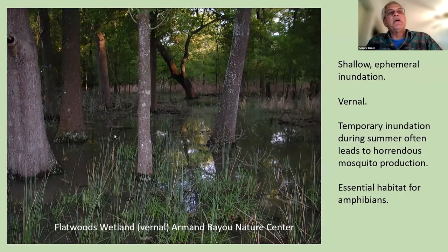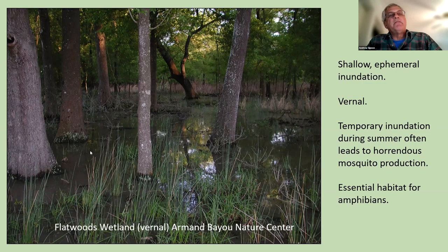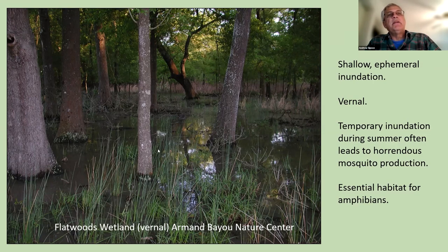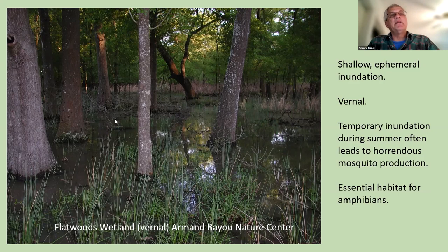There is one more wetland type — flatwoods — kind of in between a marsh and a swamp, seen at Armand Bayou Nature Center. These areas have trees in very shallow, ephemeral water, often associated with drainages where the soil is a bit better for tree growth. Ponding is usually only through the winter, and these areas get lots of insects but few fish. They are very important for breeding frogs — if you hear chorus frogs or cricket frogs at Armand Bayou, you're likely in flatwoods.